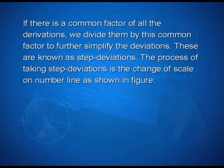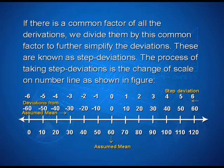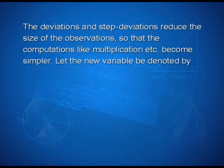The process of taking step deviations is the change of scale on the number line as shown in the figure. The values 0, 10, 20, 30, 40 through 120 correspond to deviations from the assumed mean: minus 60, minus 50, minus 40, minus 30, minus 20, minus 10, 0, 10, 20, 30, 40, 50. After step deviation, because 10 is a common factor, dividing by 10 changes the values to minus 6, minus 5, minus 4, minus 3, minus 2, minus 1, 0, 1, 2, 3, 4, 5, and 6. The deviations and step deviations reduce the size of the observations so that computations like multiplication become simpler.